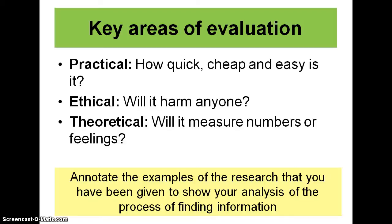An ethical approach would be perhaps an overt observation, where you've actually got permission from everybody to be there. In terms of theory, we want to know whether it's quantitative — whether it measures numbers — or whether it's qualitative — whether it measures people's feelings. Qualitative researchers are our anti-positivists, anyone that is an interpretivist, like Mead and Cooley. Our quantitative sociologists are our positivists, who use numbers, patterns and trends, like Durkheim, Marx, and all of our structuralist sociologists.